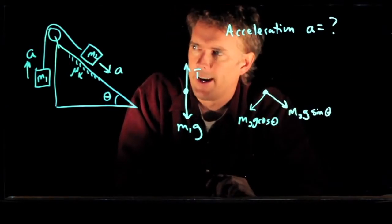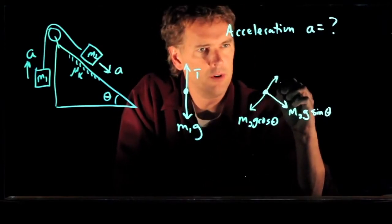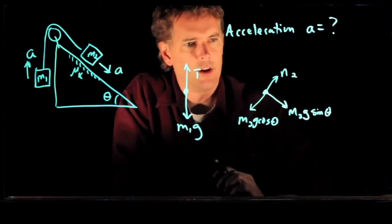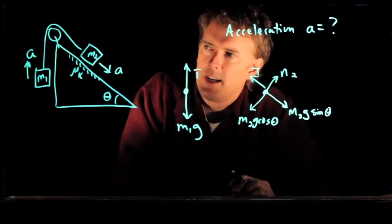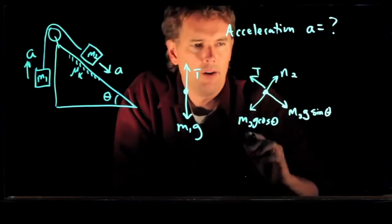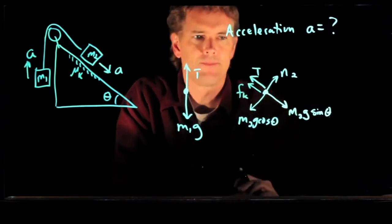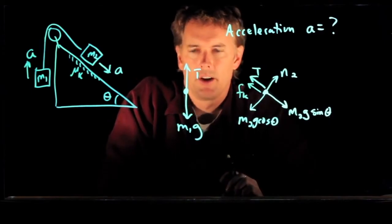What other forces are acting on M2? Well, there is the normal force from the plane. There is also tension, T, because it's tied to the cable. And there is also friction, F sub K. And that's all the forces that are acting on M2.